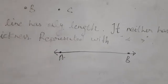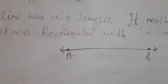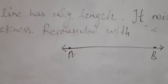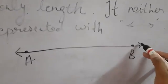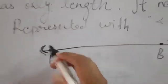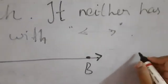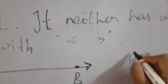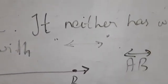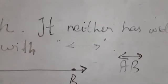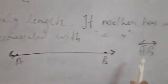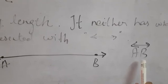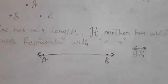One more important point: a line doesn't have an ending or a starting point. So we mark it with arrows on both sides. It is written as line AB with an arrow sign over the letters — this is the representation of line AB.